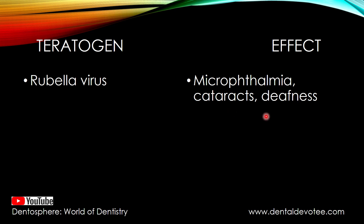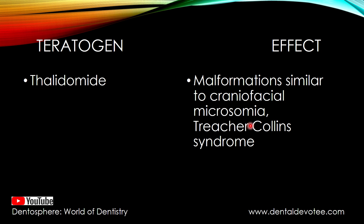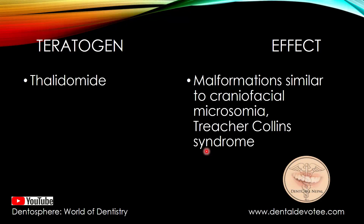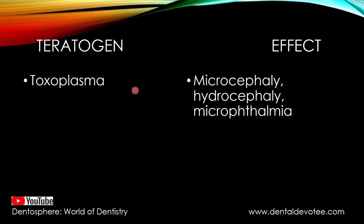Rubella virus causes micro-ophthalmia, cataracts, and deafness. Similarly, another teratogen, thalidomide, may cause malformations similar to craniofacial microsomia and Treacher Collins syndrome. Thalidomide also causes phocomelia, which is the malformation or very poorly formed or absent limbs. Previously, thalidomide was used as a drug for morning sickness during pregnancy, but later it was found to be the direct cause of phocomelia, so it was discontinued.